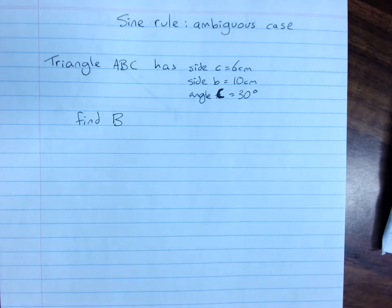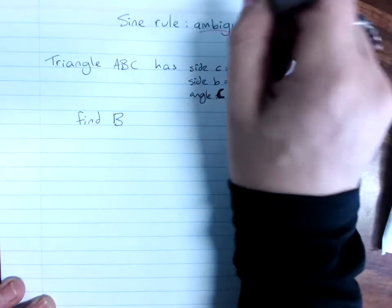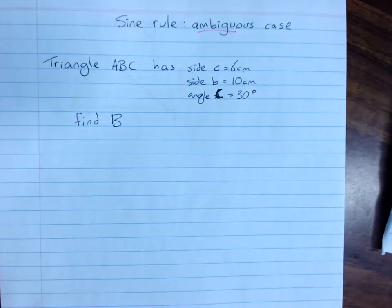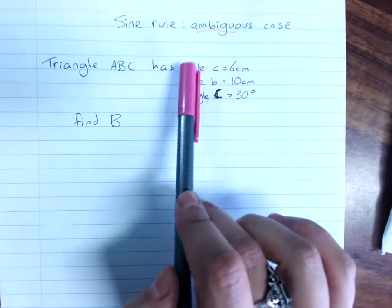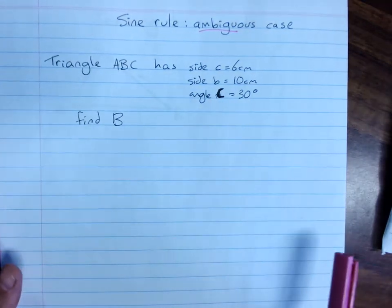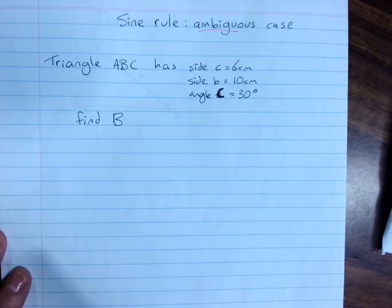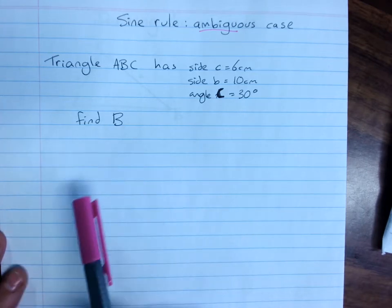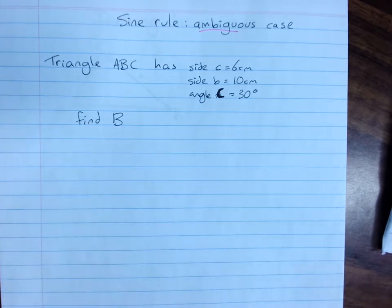The sine rule, the ambiguous case. Ambiguous refers to unclear meaning, or where there are two possible meanings or interpretations. There is a situation where we don't get given quite enough information to be certain that we can only be drawing one triangle.